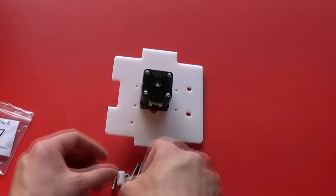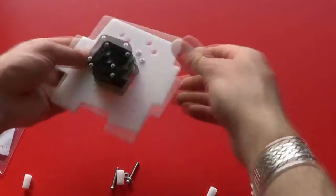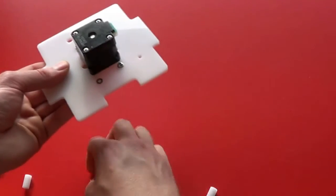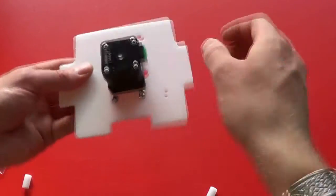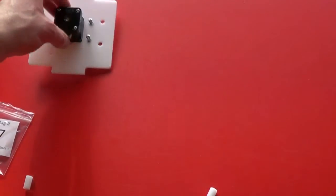Next, take the four long screws and pass them through the mounting holes in the carriage top plate. And we'll set this aside just now.